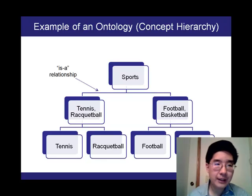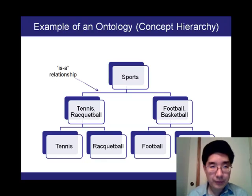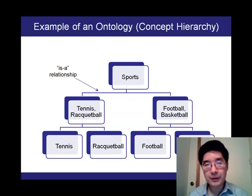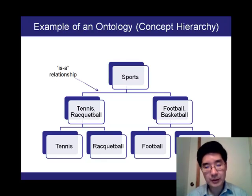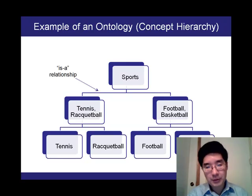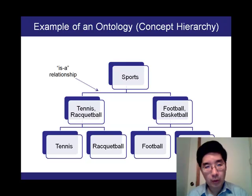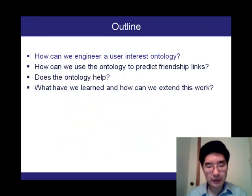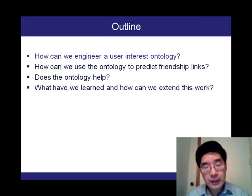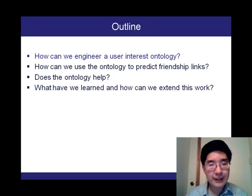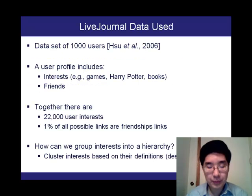A simple and straightforward example of an ontology is a concept hierarchy. We can take a concept such as sports and refine it into net-based sports and field and court-based sports, and then further into tennis, racquetball, football, and basketball. What we'd like to do is engineer a user interest ontology and then use it to predict the existence of friendship links.